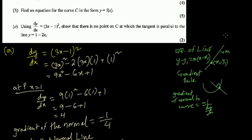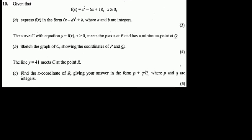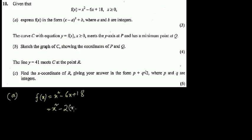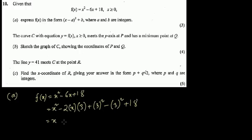The final part is question 10, which falls under the quadratic format. Question a is to express f(x) = x² - 6x + 18 in completing the square format. Using the form (a - b)²: we need b = 3 since 2 × 3 = 6, so we write (x - 3)² - 9 + 18.